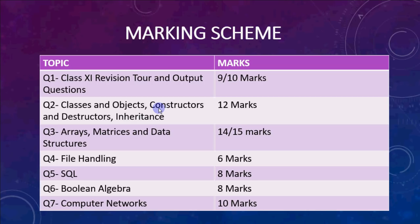Question number two has four parts totaling 12 marks. Part A is a 2-mark query related to object-oriented programming — they can ask anything regarding classes, inheritance, private, public access modifiers, and so on. The remaining parts make up the rest of the 12 marks for question number two.